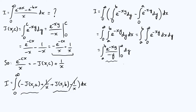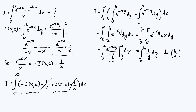Substituting the limits: as x → ∞, e^{-∞} → 0, so that part disappears. Substituting x = 0 gives e^0 = 1, so the inner integral simplifies to 1/y. We are left with just the integral from a to b of 1/y with respect to y. That's a standard integral — it's a natural log — giving log(b) - log(a), which is the natural log of b/a. And there is our result.